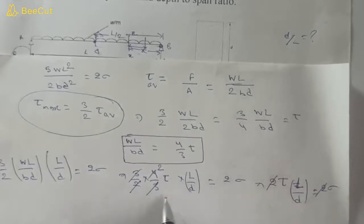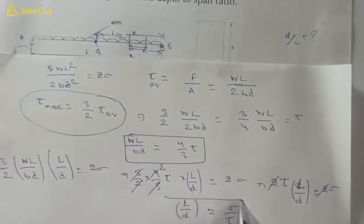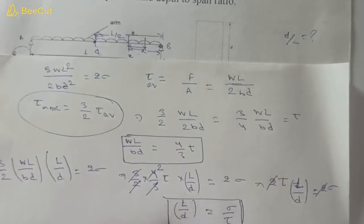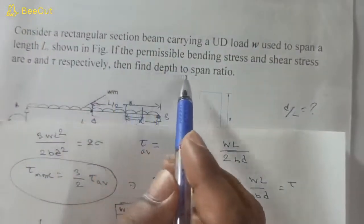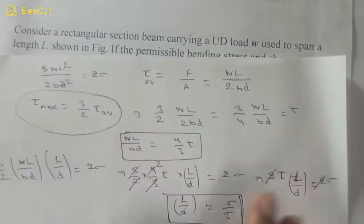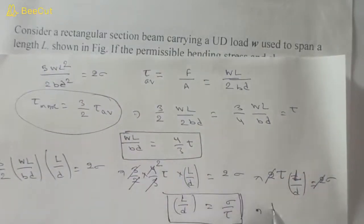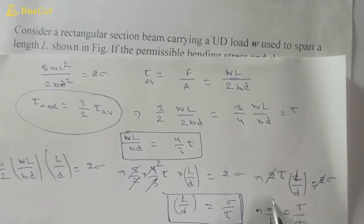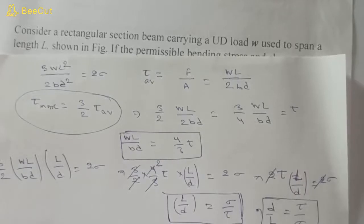The 2's cancel, so l/d equals sigma/tau. Since we need to find the depth to span ratio d by l, the answer is d/l equals tau/sigma. I hope you understood how to calculate this. If you like this video, please subscribe to our channel. Thanks for watching.